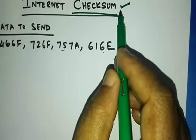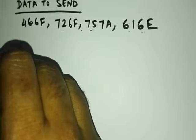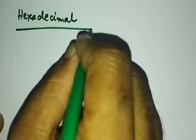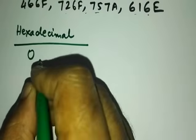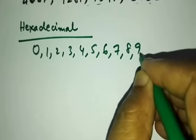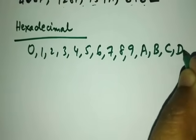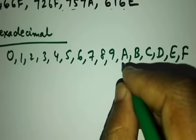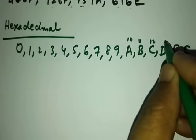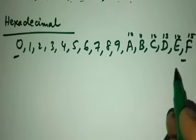Before I come to this algorithm, I will tell you about two things. The first is that you should have knowledge about hexadecimal digits. Hexadecimal values start from 0, 1, 2, 3, 4, 5, 6, 7, 8, 9 till 15. After 9, the values will be a, b, c, d, e, f — where a represents 10, b represents 11, 12, 13, 14, 15. So we have values from 0 till 15.